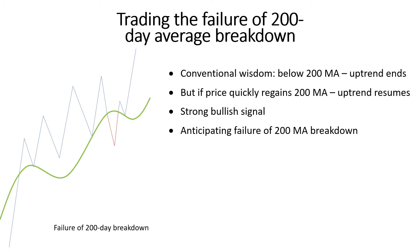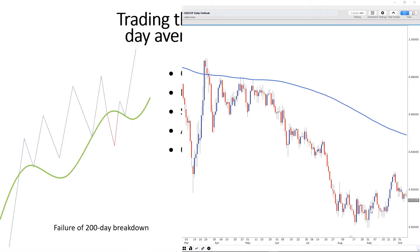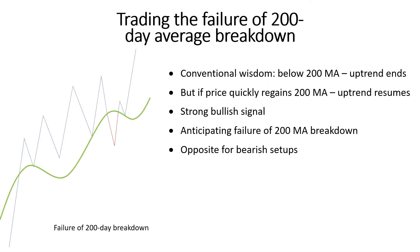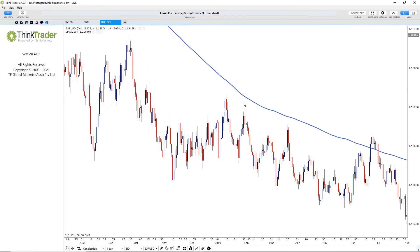Obviously, the opposite is true in the case of a bear trend where the 200-day average is offering resistance. And when it comes to trading the failure of the 200-day average break in a bear trend, we look for price to go back below the falling 200-day average for a short trade. Let's now look at a few examples to discuss how we could trade the failure of the 200-day average breakdown.